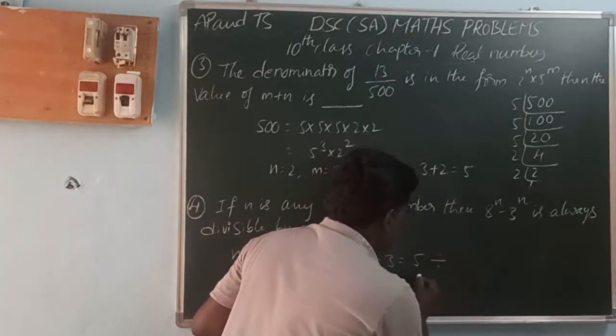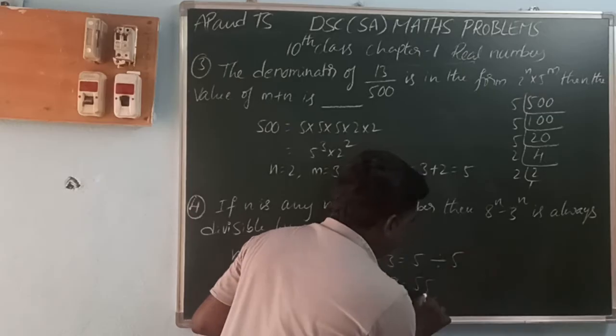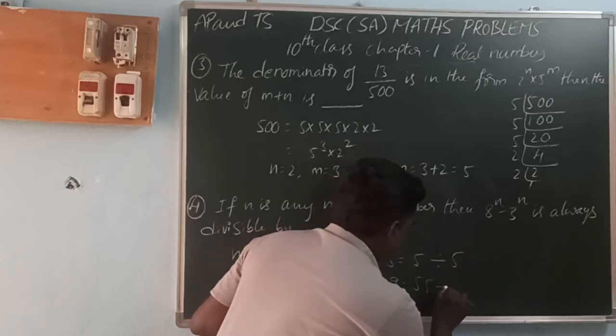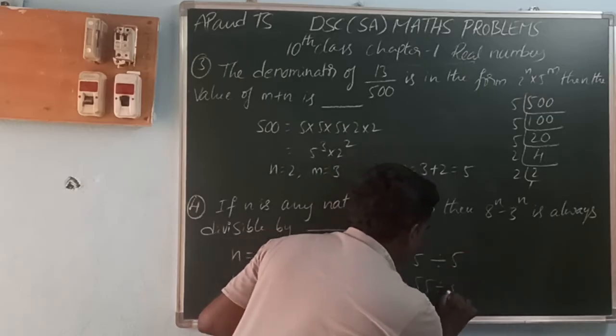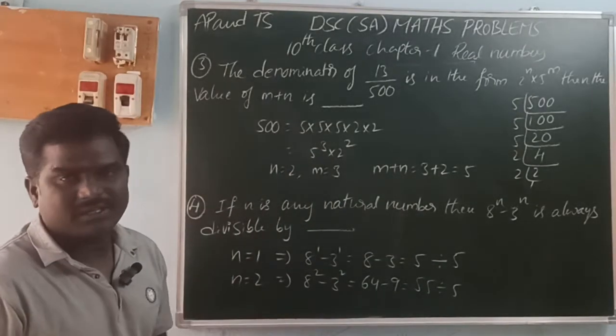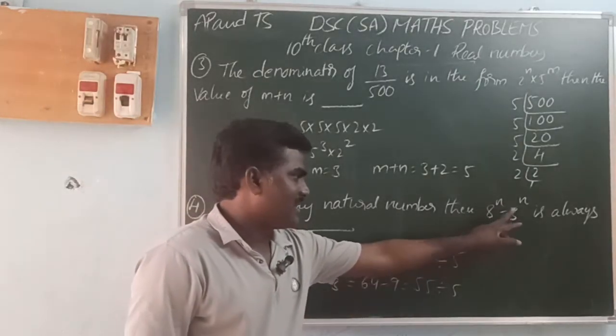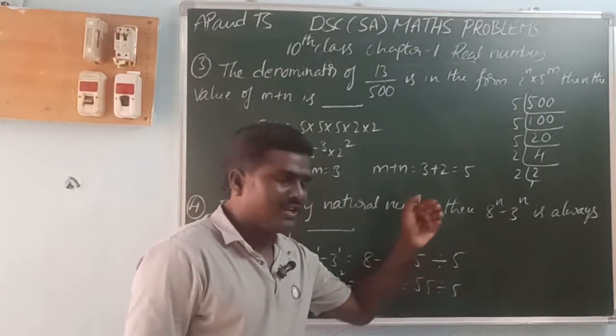Both 5 and 55 end in 5, so they are always divisible by 5. The last digit is 5, so for any natural number n, the expression 8 power n minus 3 power n is always divisible by 5.